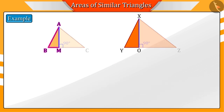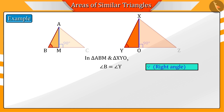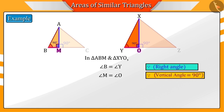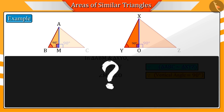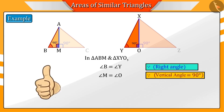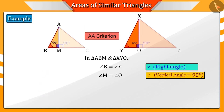Now, let us discuss triangle ABM and triangle XYO. We see that angle B is equal to angle Y because these are corresponding angles of similar triangles ABC and XYZ. And angle M is equal to angle O because angle M and angle O are right angles. These triangles are similar according to the AA criteria. Hence, the ratio of corresponding sides AM and XO, and sides AB and XY, will be equal.